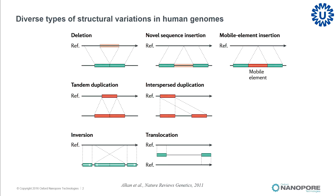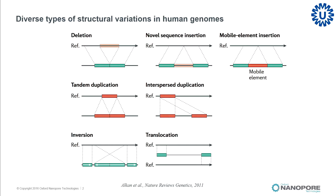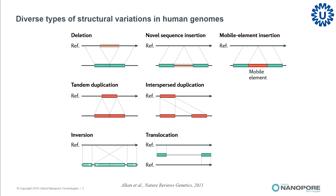Structural variations come in many different flavors, and I like the complexity of all of this — the human genome in that sense is a very nice object of study. All these different types of structural variations also pose challenges in terms of their detection.